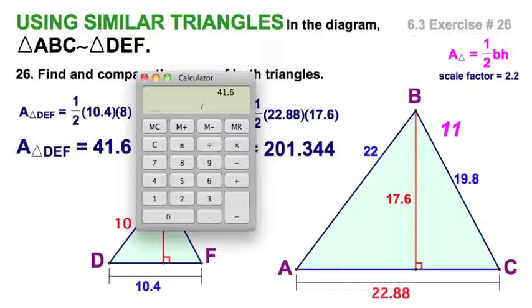Take the 201.344 and divide by 41.6. So the area of the big triangle divide by the area of the little triangle, and we'll get a single number ratio, just like we did with the scale factor. And ready, go. But we did not get 2.2, because the ratio of the areas is not the same as the ratio of the individual sides.